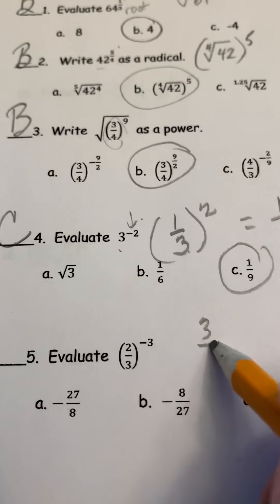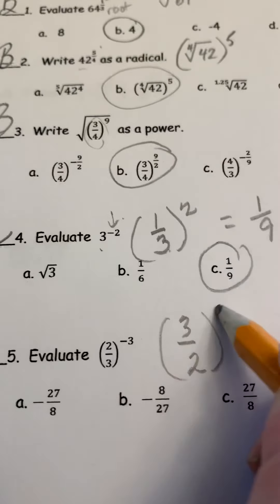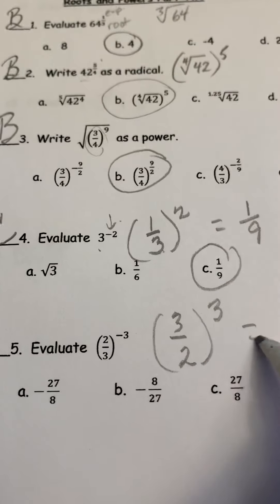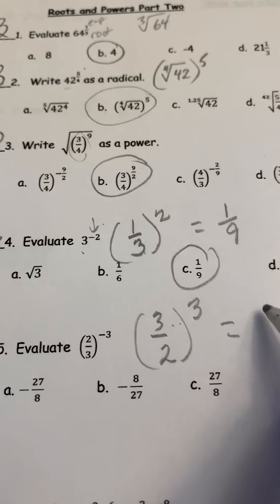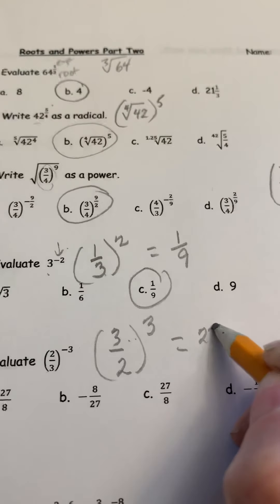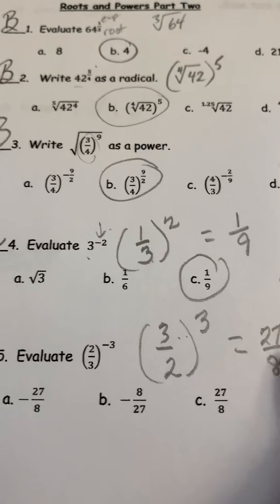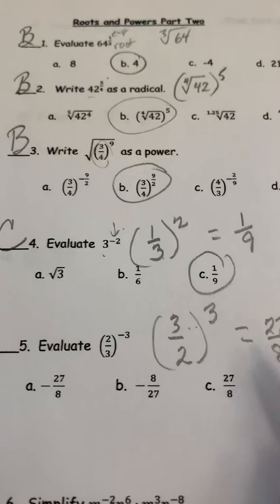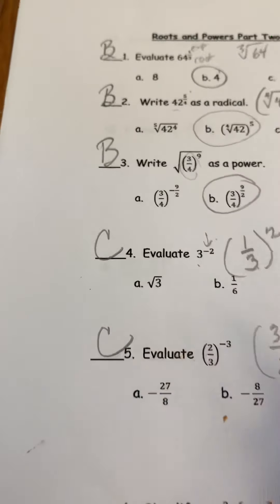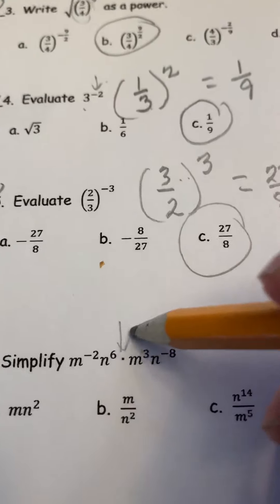Again we're going to evaluate, so we write the reciprocal of the base. The reciprocal of two thirds is three halves, and this becomes a positive exponent. Three times three times three is 27, and two times two times two is 8, so your answer here should have been again C.